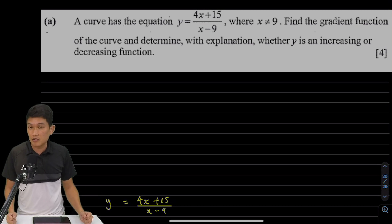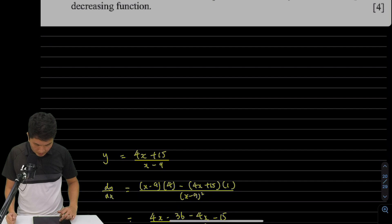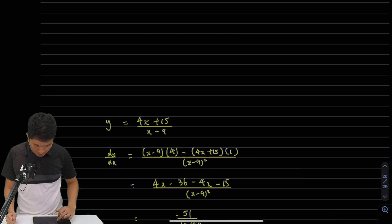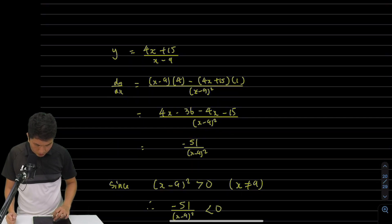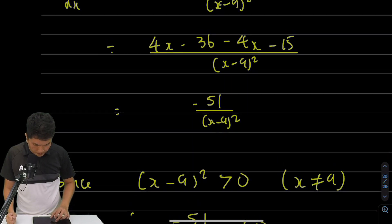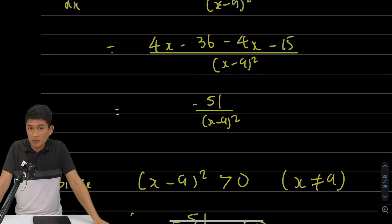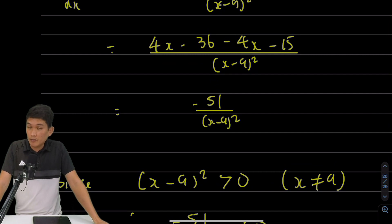So what we're going to do is apply the quotient rule. Given this, you can go ahead and differentiate and you should get this answer: negative 51 over (x minus 9) all squared. So this is part 1 of the answer because we need to find the gradient function.